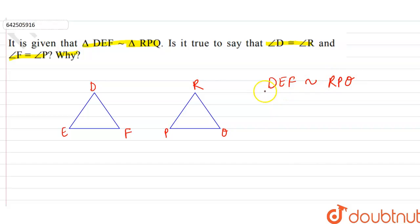Since they are similar, their corresponding angles will be equal. The corresponding angle of angle D is angle R. So we can say that angle D is equal to angle R.